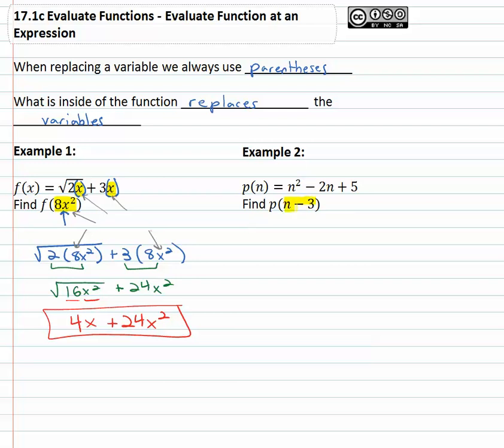Again what's inside the function is the n minus 3. So that's going to go in for both of the variables. We'll think about it as stuff squared minus 2 times stuff plus 5 and that stuff is whatever is inside the function. So stuff squared minus 2 times stuff plus 5 and that stuff is the n minus 3 inside the function.